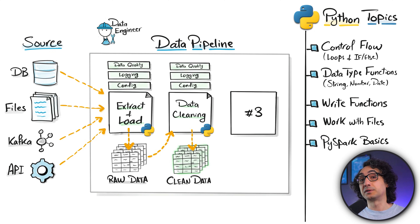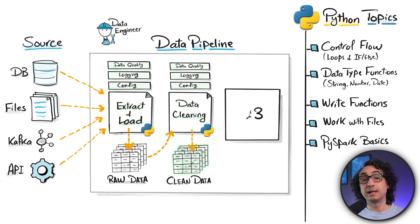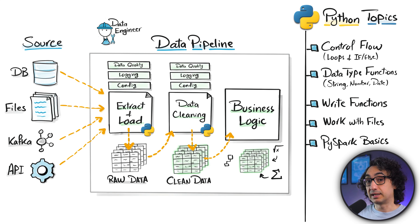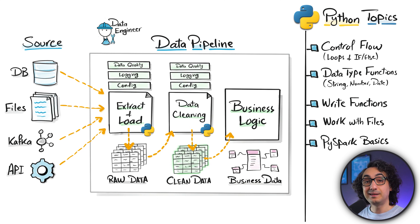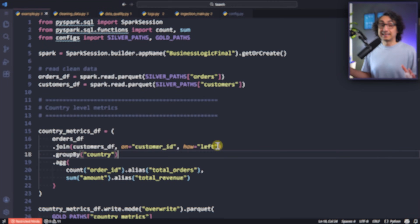So far: Step 1 brought the data in, Step 2 cleaned the data. Now the last step — here we apply the business logic and the fun starts. We take the clean data and start joining it together, doing data aggregations, and applying business transformations. Same structure: a Python main script with config files, logging, and data quality add-ons.